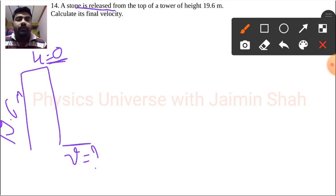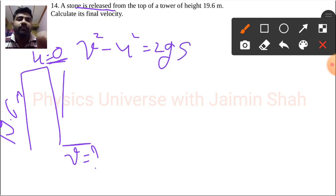So we can put here final third equation of motion which is v square minus u square is equal to 2gs. Now we are moving downward so we have to take g as positive.